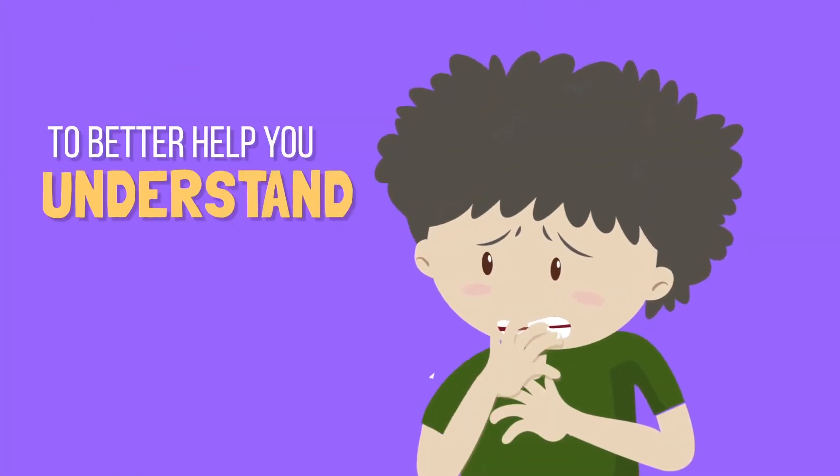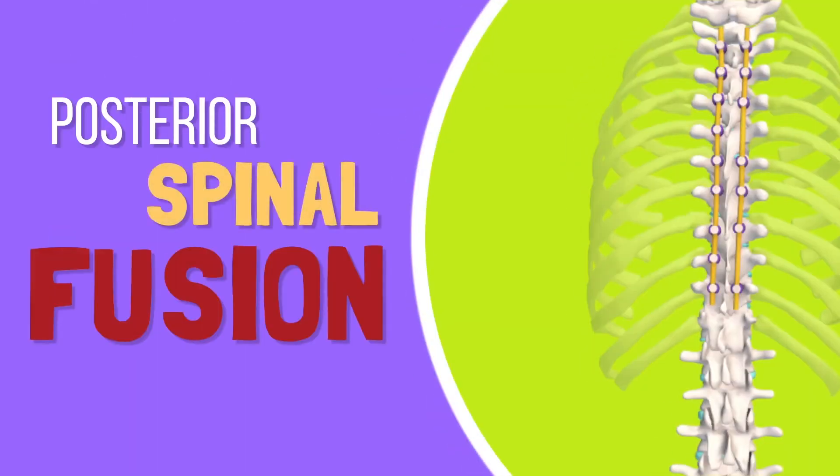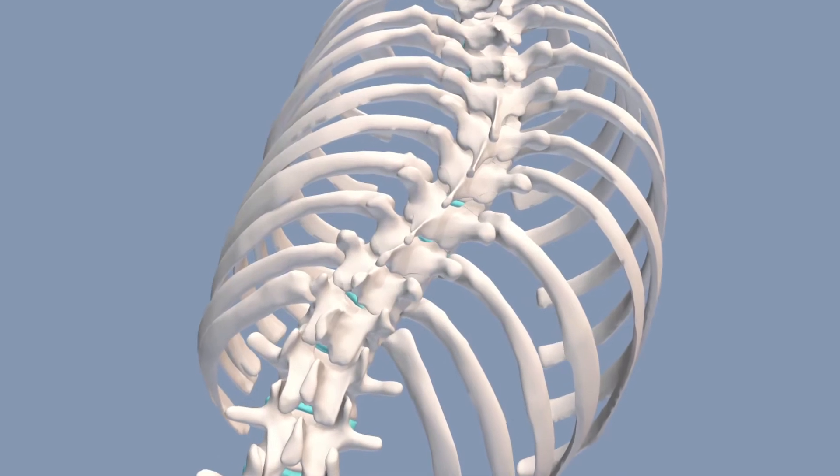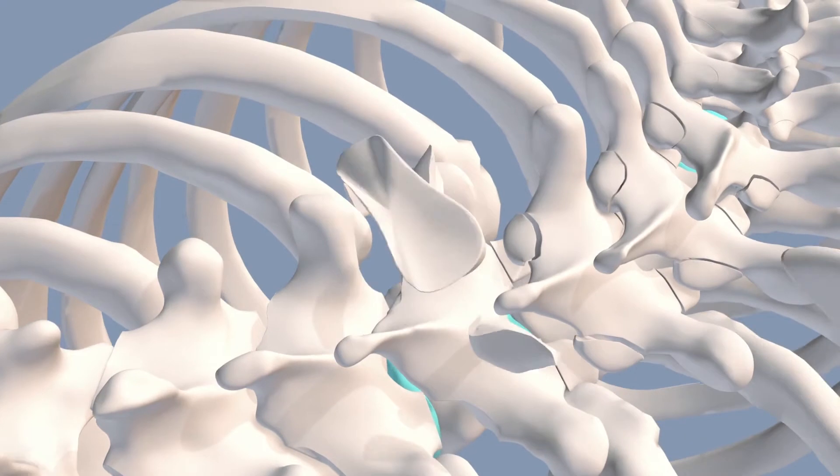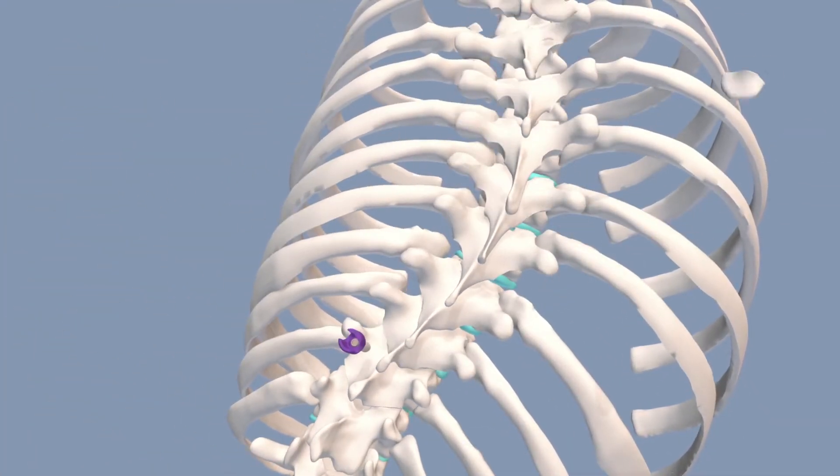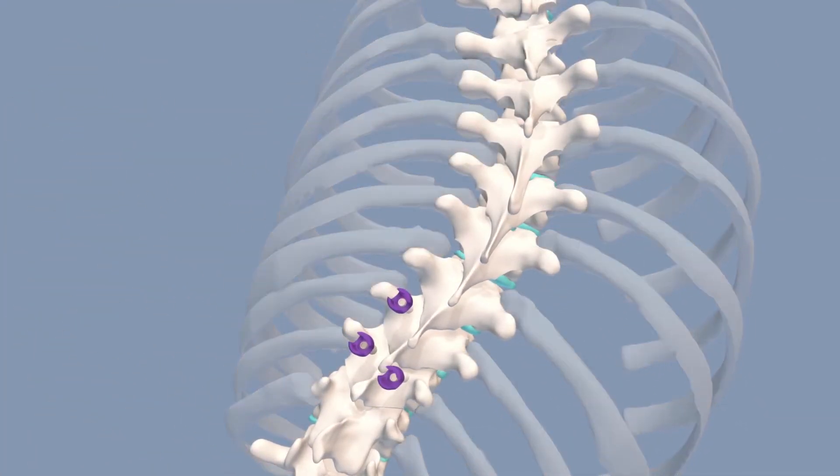To help you better understand this procedure, let's look at the common approach called posterior spinal fusion with instrumentation. With this procedure, an incision is made along the spine. Then the surgeons will remove the facet joints. Doing this will help the surgeon see where to place the screws better and allows the spine to be more flexible.